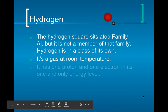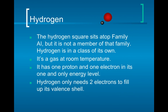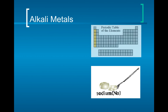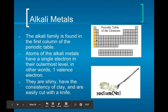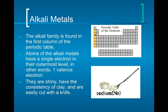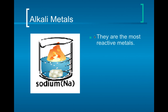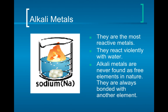Hydrogen has one proton and no neutrons — it's just there to bond with other things; it's a bonding machine. The alkali metals have a single valence electron. They're shiny, kind of like clay, and can easily be cut with a knife. They are the most reactive metals — put sodium in water and it will explode.